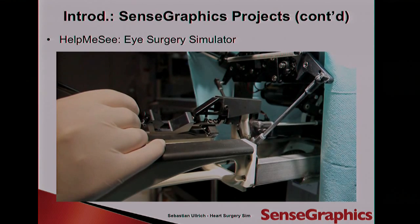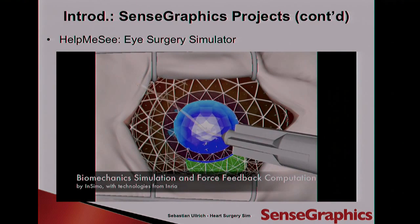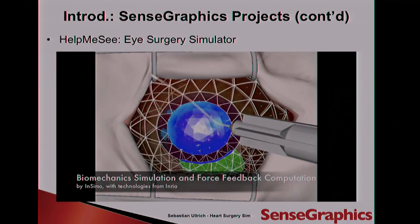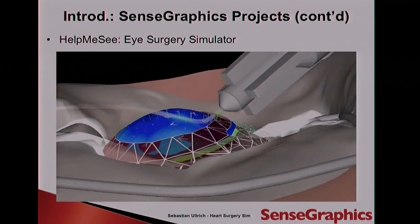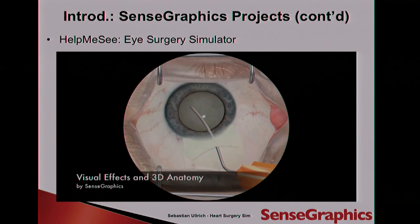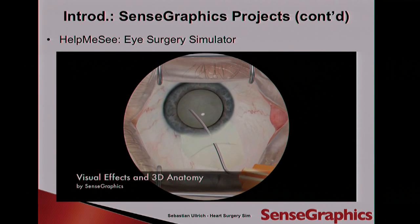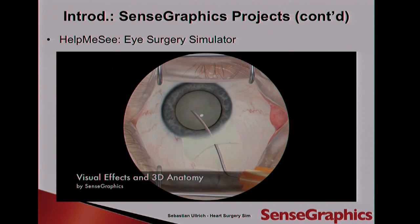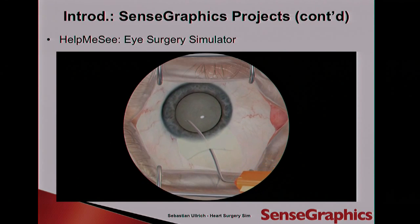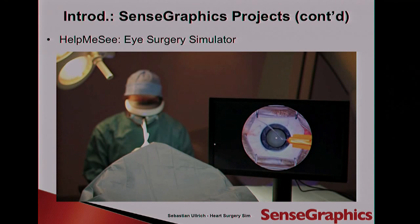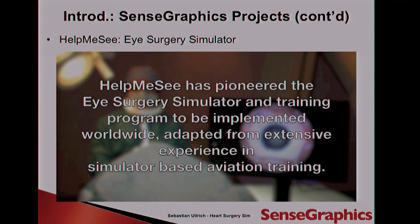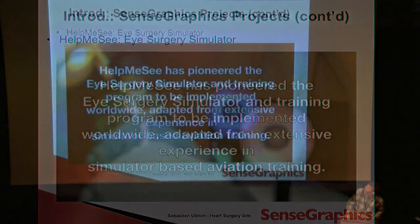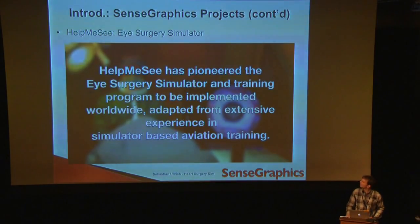Here you can see a haptics device which you can use to control the instrument and feel forces. This is the simulation mesh with force fields and so on, and this is the rendering — all happening in real time, which is quite a challenge to fake all the reflections. Right now we are also adding fluids.